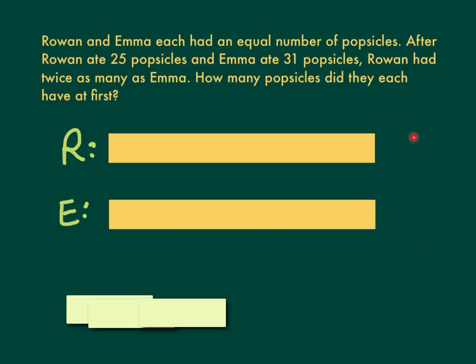I don't know how many this is altogether, and I'm asked how much each person has, which I don't know. But I do know that Rowan ate 25 and Emma ate 31, and when all is said and done, Rowan has twice as many as Emma.